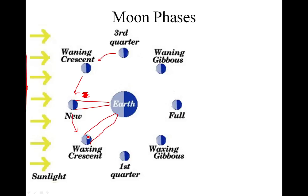Is it a crescent on the right side or on the left side? Think about it — if you're standing on the Earth looking up, you're going to see a little right crescent, something like that. So that is a waxing crescent moon — it's the little bit of the right side lit up.